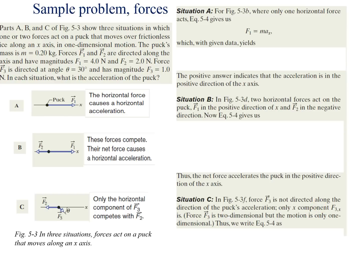Let's do an example. Parts A, B, and C show three different situations in which one or two forces act on a puck that moves over frictionless ice along an x-axis. The puck's mass is 0.2 kilograms. Forces F1 and F2 are directed along the axis with magnitudes F1 equals 4.0 newtons and F2 equals 2.0 newtons. Force F3 is directed at an angle theta equals 30 degrees and has a magnitude of 1 newton. In each situation, what is the acceleration of the puck?